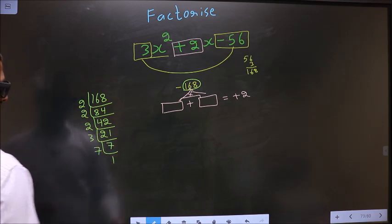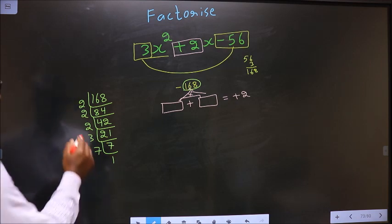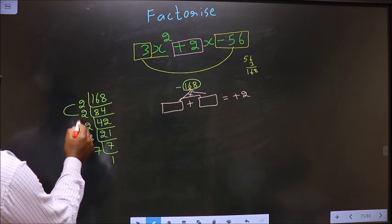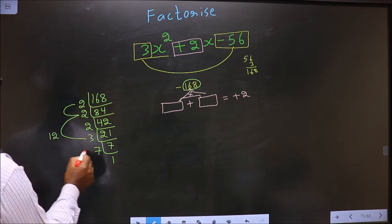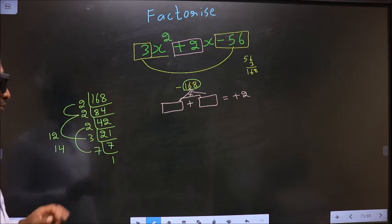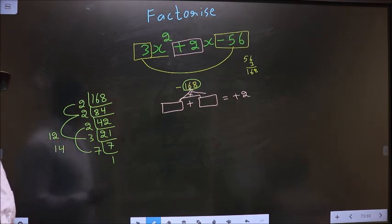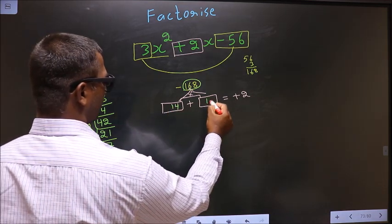The two numbers should be: 2 × 2 = 4, then 4 × 3 = 12. The second number is 7 × 2 = 14. Check: 14 - 12 = 2, and 14 × 12 = 168. So we have 14 and 12.